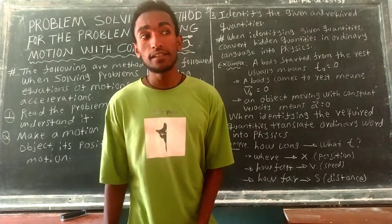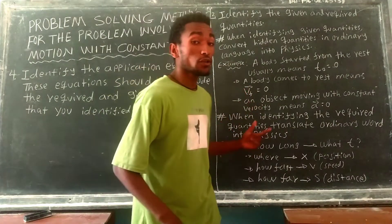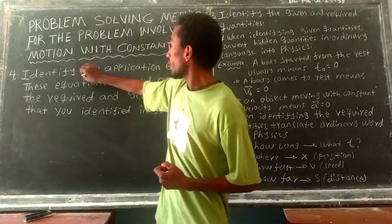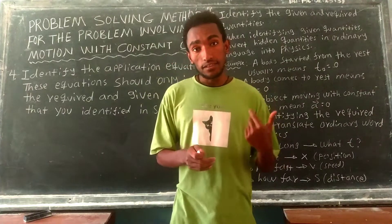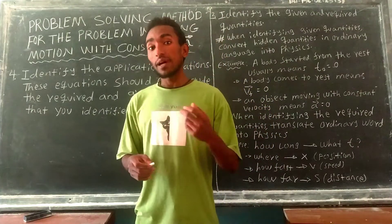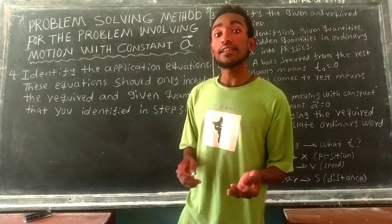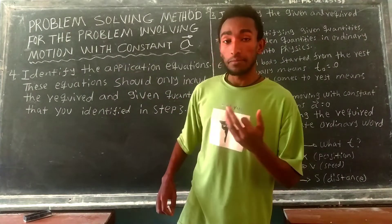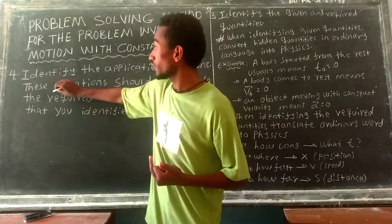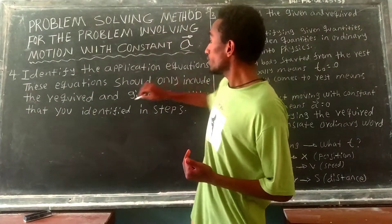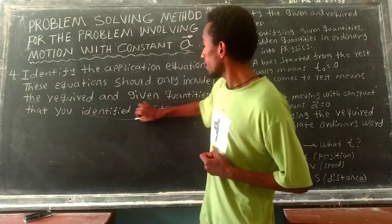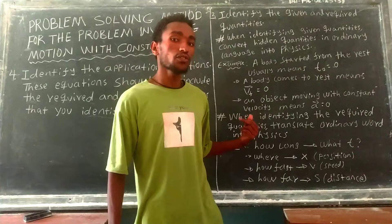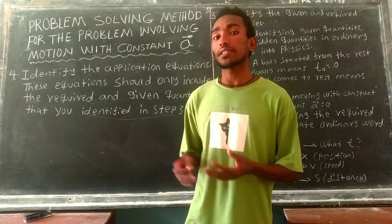The steps are: identify the given quantities, identify the required quantities, and determine the appropriate equation to apply. The appropriate equation should only require the given quantities and the one required quantity you are solving for.